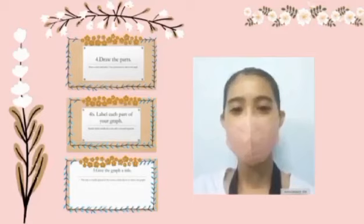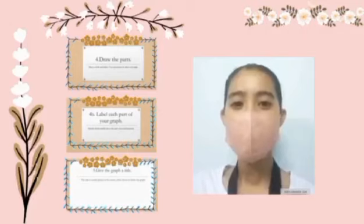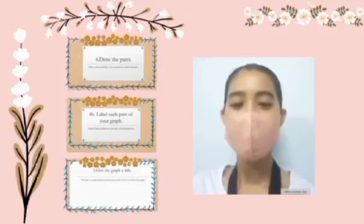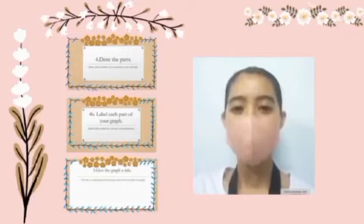Next, draw the parts. Draw a circle and use a protractor to draw each section. Label each part on your graph and identify which variable each axis represents. Finally, give the graph a title. The title is usually based on the subject we are learning about from the data in the graph.